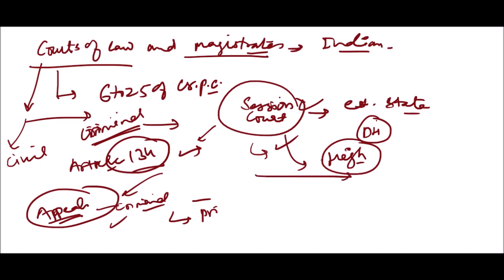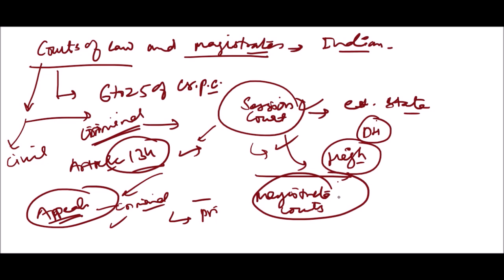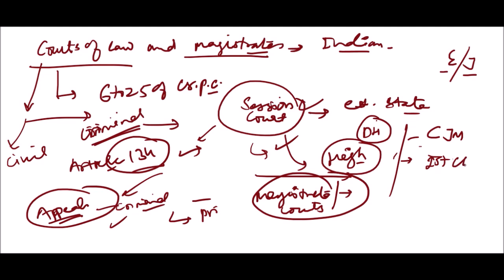Now, magistrate courts. There are three types of magistrates. The basic classification is executive and judicial magistrate. The judicial magistrates are: Chief Judicial Magistrate, First Class Judicial Magistrate, and Second Class Judicial Magistrate.